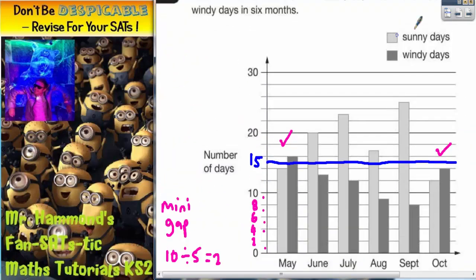And what we need to do is count how many months had more than 15 sunny days. Well sunny is the light grey bars. So May is below the line for sunny, so that one doesn't count. June is above the line. July is above the line for sunny. August is above the line for sunny. September is above the line for sunny. October is below the line for sunny. So we've got June, July, August and September that is above the line for 15 sunny days. So that is four months.